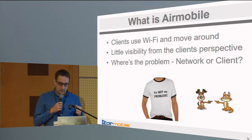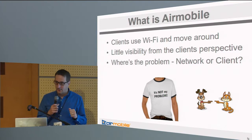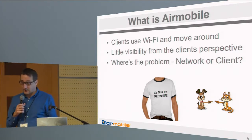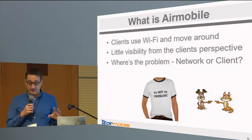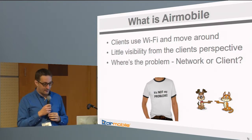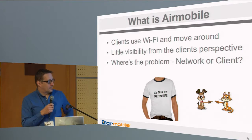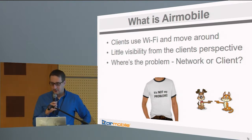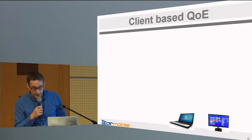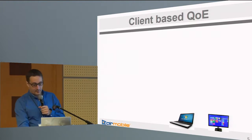While we have good visibility when it comes to network infrastructure, we have very little visibility normally when it comes to clients. The question is: where's the problem — network or client? That's what you'd really like to know. So imagine you have those PCs running somewhere.